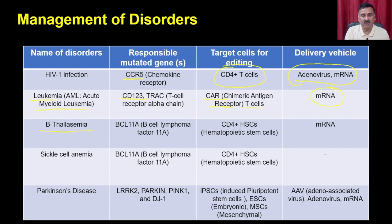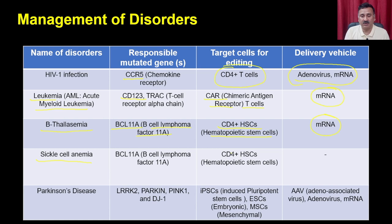Then we have beta thalassemia, where BCL11A — the B cell lymphoma factor 11A — is involved. The target cells are CD34-positive HSCs or hematopoietic stem cells, and messenger RNA is used for delivering the clone factors. For sickle cell anemia, BCL11A and CD4-positive HSCs are targeted. In Parkinson disease, the relevant genes are LRRK2, Parkin, Pink1, or DJ1, and the target cells are induced pluripotent stem cells, embryonic stem cells, or mesenchymal stem cells, using adeno-associated viruses, adenovirus, or messenger RNA.